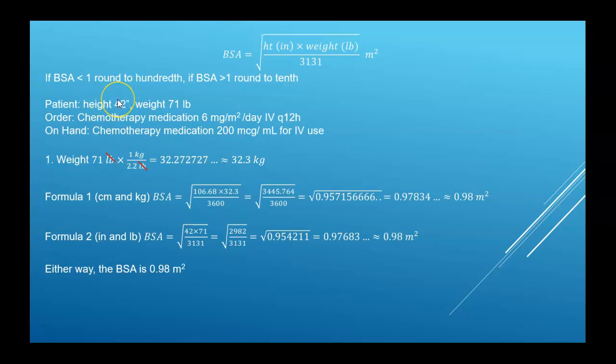Now if you only memorize the metric, you're also going to have to convert the height 42 inches. To convert an inch to a centimeter, one inch equals 2.54 centimeters, so you would take your 42 times your 2.54 and get your 106.68 centimeters. So we have our kilograms and our centimeters, multiply them, divide by 3600, then take the square root. Our BSA is less than one, so we'll round to the second decimal place.